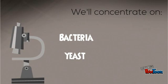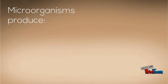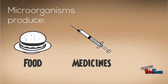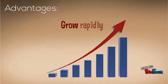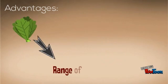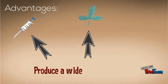They are both unicellular. Microorganisms can be used by humans to produce foods and other useful substances. They are suitable for this role because they grow rapidly, have simple nutrient requirements, they have a range of food sources, and they can produce a wide range of products.